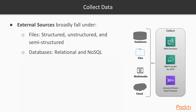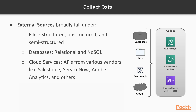Two, databases. There are two main flavors: SQL and NoSQL. SQL is for relational stores. NoSQL covers stores like document stores, like MongoDB. Three, cloud services — typically API-based interfaces from SaaS providers like Salesforce, ServiceNow, etc.